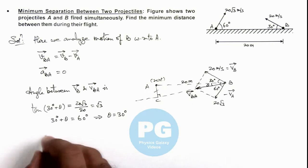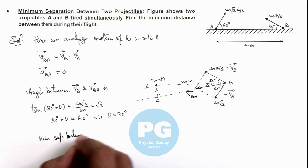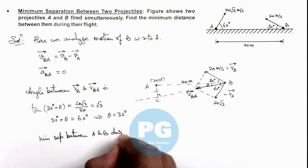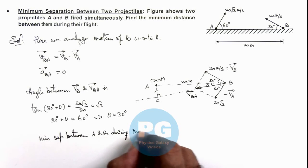So if this point is C, we can write the minimum separation between A and B during motion.